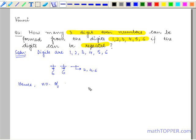the total number of ways in which 3 digits can be selected for forming a 3-digit even number is equal to 6 into 6 into 3, which is equal to 108 ways. This gives the required answer.